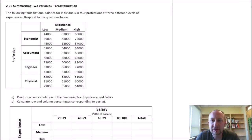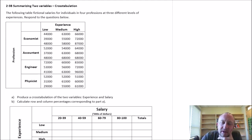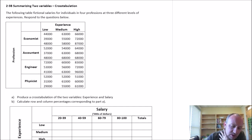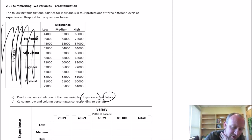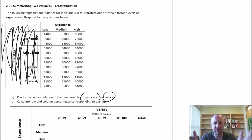Hello, so this exercise is on cross-tabulation, where we're going to produce a table of frequencies that counts individual observations as they meet specific criteria. Our question is asking us to produce a cross tabulation on the variables of experience and salary, so we can ignore the information on profession. All we need to concern ourselves with is experience and salary level.